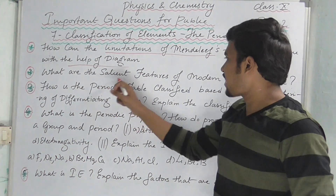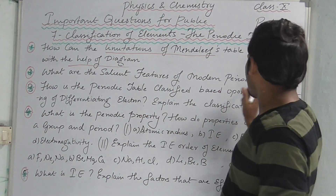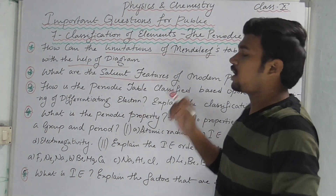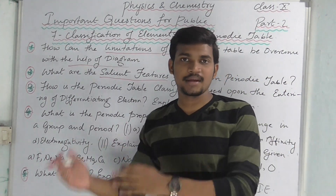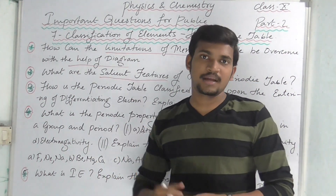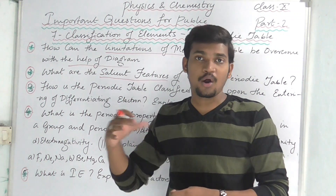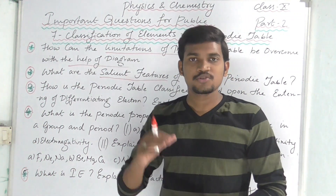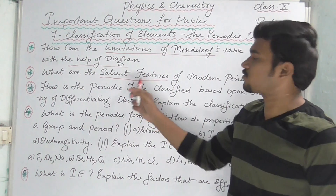Next: what are the salient features of the modern periodic table? You need to write about the modern periodic table features — periods, groups, elements, and totals. That covers a lot of information.